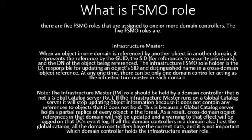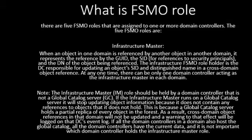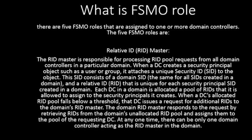This is because a global catalog server holds a partial replica of every object. As a result, cross-domain object references in that domain will not be updated and a warning to that effect will be logged on the DC event log. If all the domain controllers in a domain also host the global catalog, all the domain controllers have the current data and it is not important which domain controller holds the infrastructure master role.